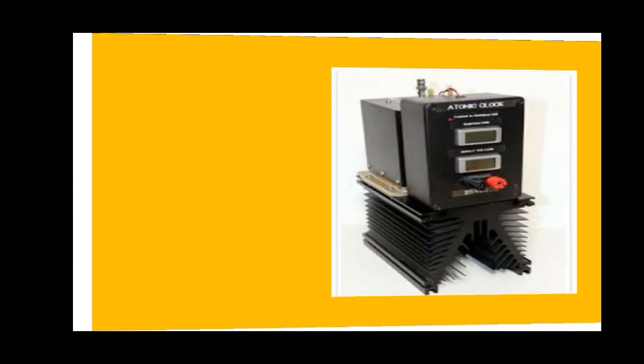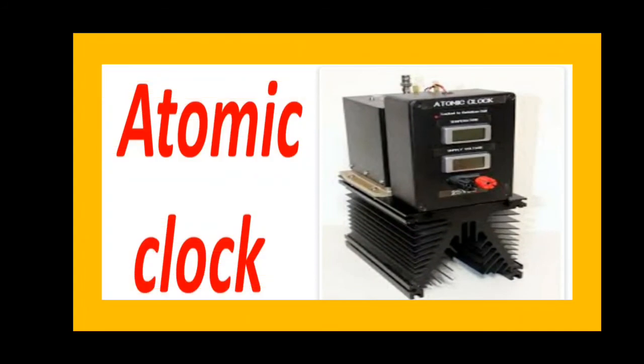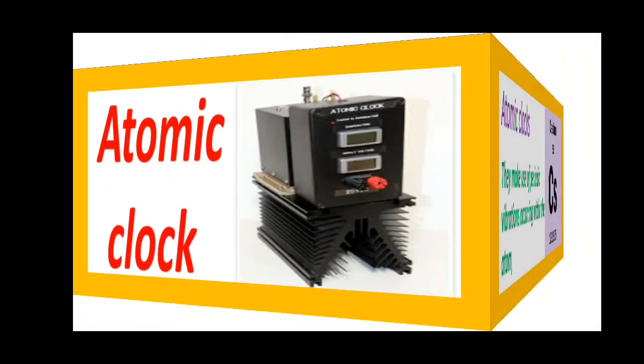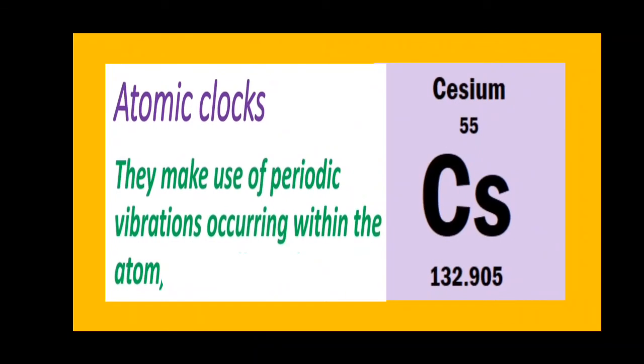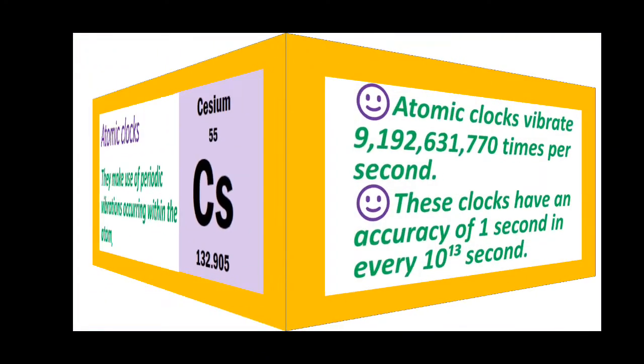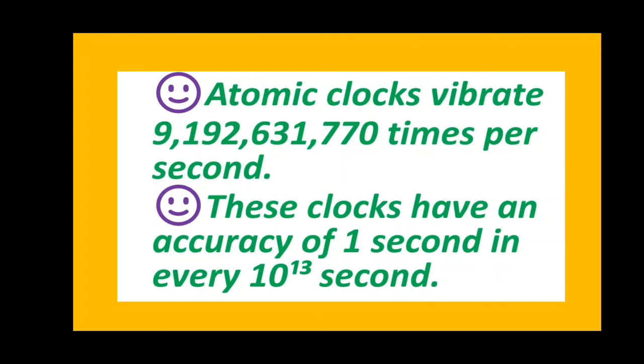The most accurate clocks are the atomic clocks. They make use of the periodic vibrations occurring within the cesium atom with atomic number 55 and mass number 133. Atomic clock vibrates 9,192,631,770 times per second. These clocks have an accuracy of one second in every 10 to the power of 13 seconds. That is, they show an error of one second in every 10 to the power of 13 seconds.